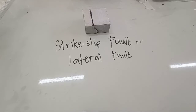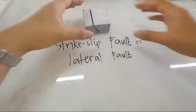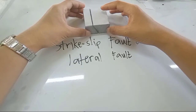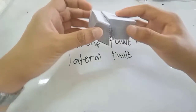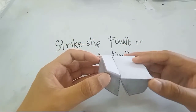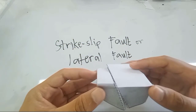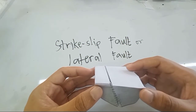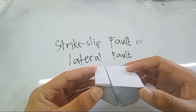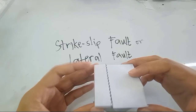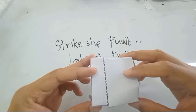And let's have the third type of fault, which is the strike-slip fault, also known as the lateral fault. This type forms when the blocks of rock on either side of a vertical or nearly vertical fracture move past each other. The movement is lateral.